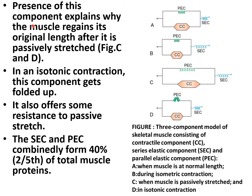The presence of the parallel elastic component explains why the muscle regains its original length after it is passively stretched, as seen in figures C and D. In an isotonic contraction, this component gets folded up and offers some resistance to passive stretch. The series elastic component and parallel elastic component together form about 40% of the total muscle protein.